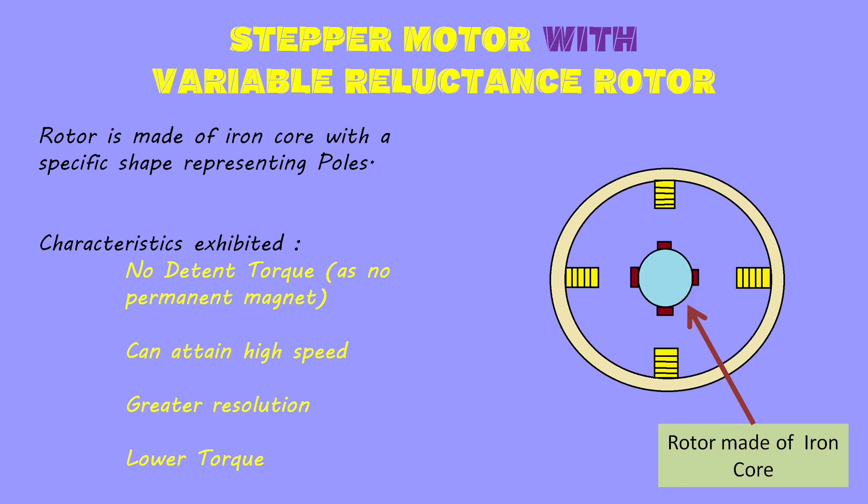Variable reluctance rotor: here the rotor is made of an iron core with a specific shape representing poles on the rotor. These poles help it in aligning with the stator phases. As there is no permanent magnet in this type of motor, detent torque will not be present. This type of stepper motor can reach higher speed and greater resolution but will possess lower torque.